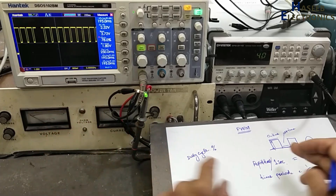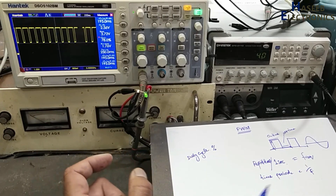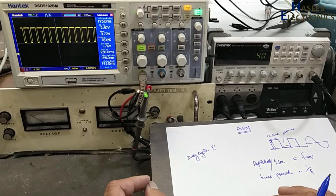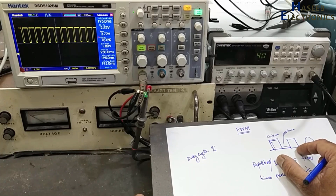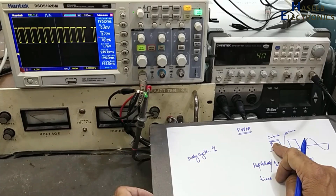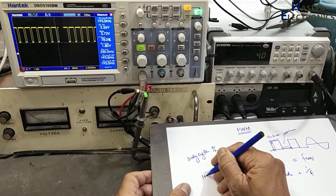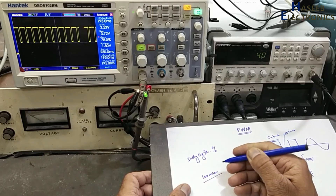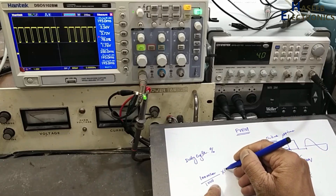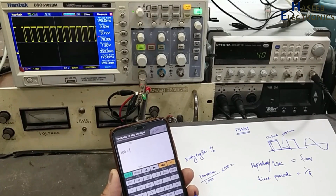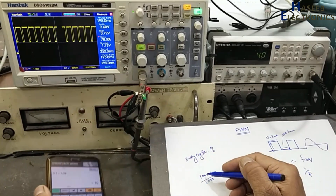If you have one second time for one pulse, and out of one second it remains on for 0.5 second and off for 0.5 second, the duty cycle is 50 percent. On time divided by total time gives the duty cycle. If it remains on 0.1 second out of one second, that is 10 percent duty cycle: 100 milliseconds divided by 1000 milliseconds, multiplied by 100, equals 10 percent. If on time increases, duty cycle percent will increase.